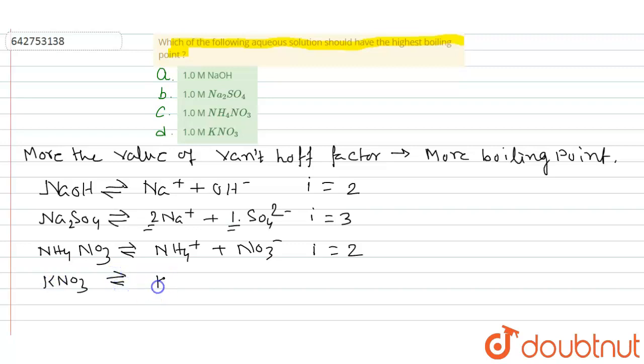Van't Hoff factor i is maximum for Na2SO4. So Na2SO4 has more boiling point. So option B is correct.